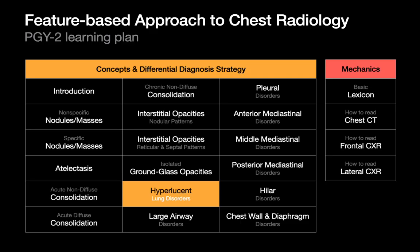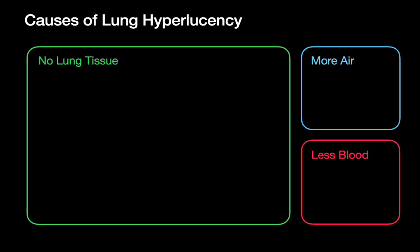In most of our prior talks, we've been discussing various abnormal lung opacities. For this talk, we're going to be focusing on the opposite situation: when the lung looks abnormally lucent. Lung can look abnormally lucent when there's no lung parenchyma in an area, when there's too much air in the lung, or when there's not enough perfusion in the lung.